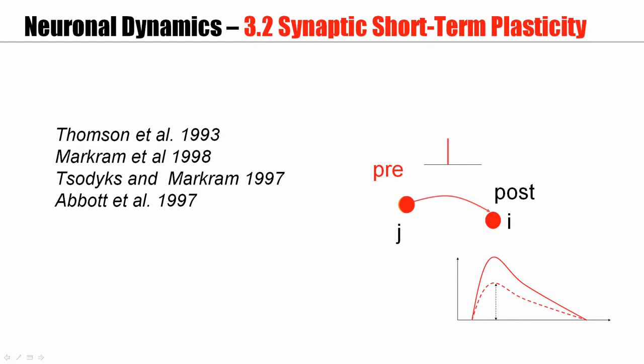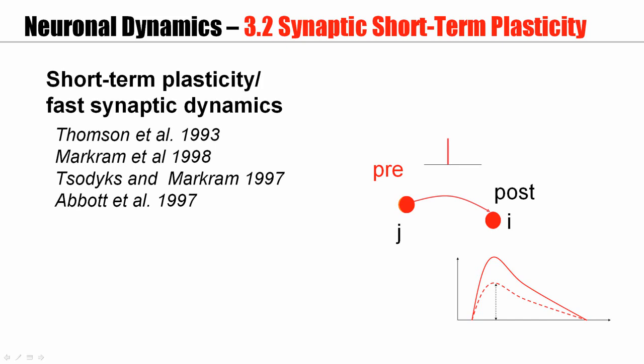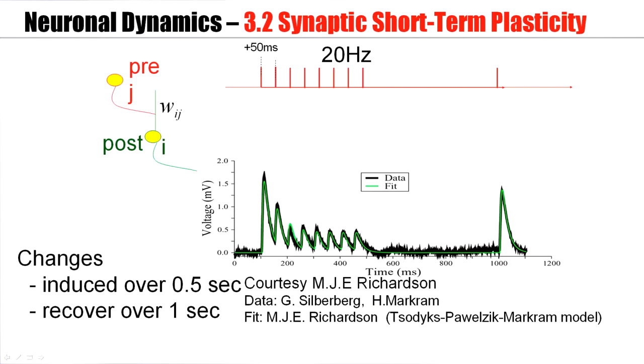How can you see these changes of synaptic strength? A famous protocol is to inject a sequence of short pulses into a presynaptic neuron so that this presynaptic neuron fires, for example, eight action potentials, which travel along the dendrite, arrive at the synapse, and cause a response measured in the post-synaptic cell.